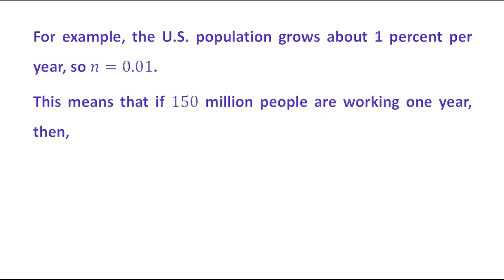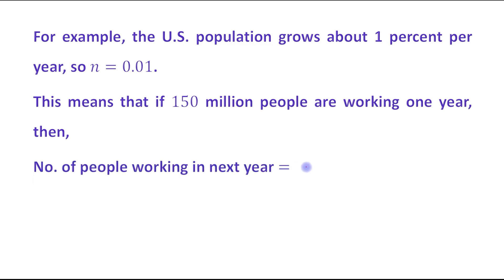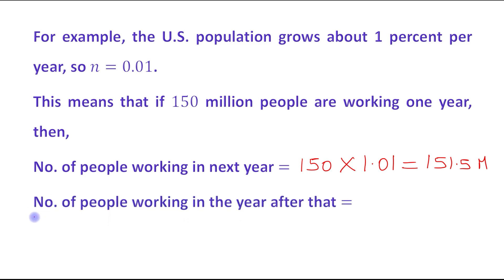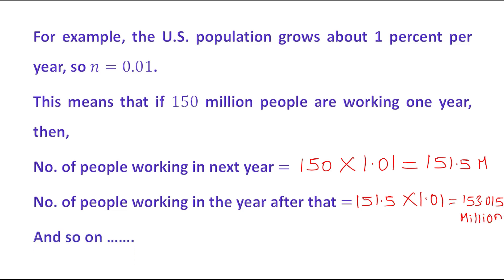This means that if 150 million people are working one year, then the number of people working in the next year will be 150 times 1.01, which equals 151.5 million. In the same way, the number of people working the year after that will be 151.5 times 1.01, which equals 153.015 million, and so on.